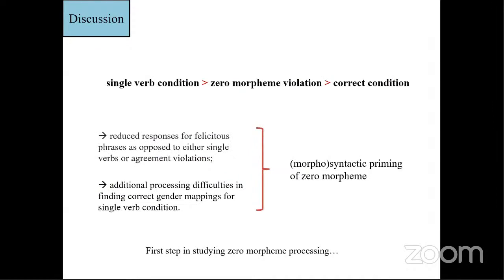So summing up all together the results, here you can see the scale of activation distribution among conditions and the main outcomes are the reduced responses for the correct phrases, as opposed to the either single verbs or agreement violations and the additional processing difficulties in finding correct gender mappings for single verb condition, which result in higher activation of it. So together that will give us the evidence of zero morpheme priming.